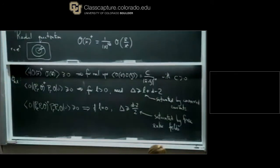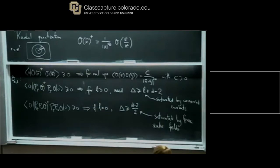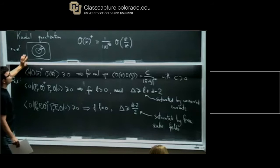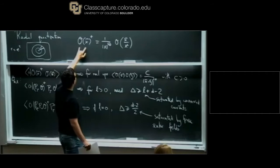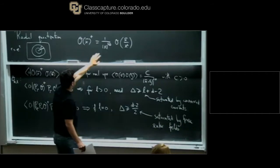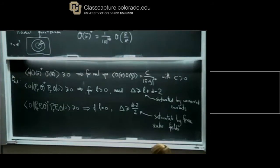Where we left off is that the reality conditions — the conjugation relations in radial quantization — if we interpret the logarithm of the radial distance as the Euclidean time that we continue to Lorentzian time, and the Lorentzian theory is unitary, that imposes some reality conditions. In Euclidean signature, O of x dagger takes this form if O has dimension delta.